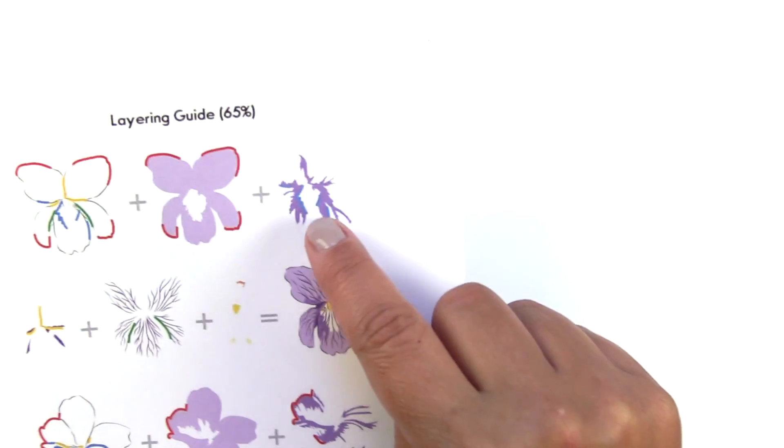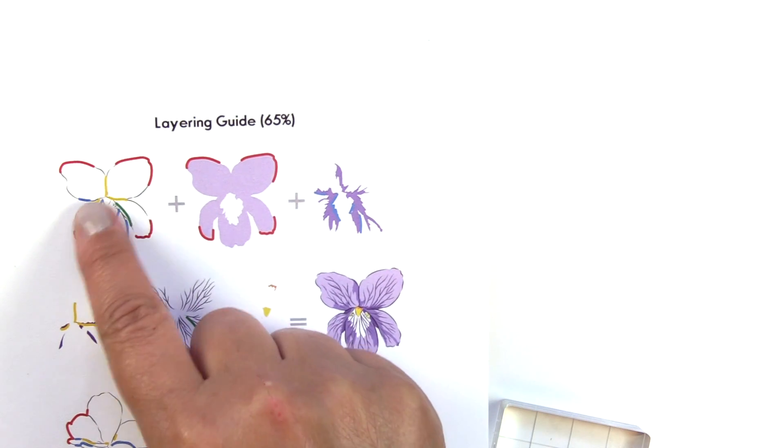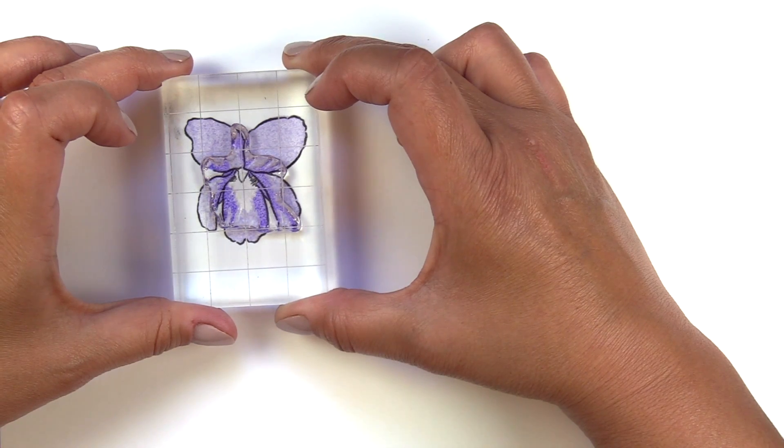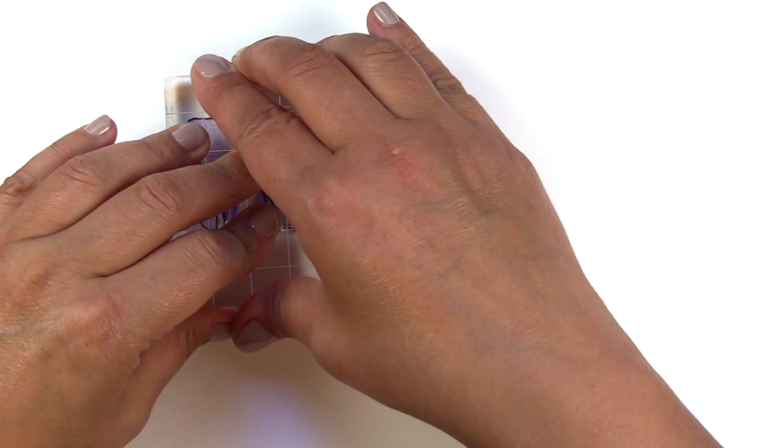The second layer, be sure to refer to your stamp packaging and the layering guide. We're going to line up the areas in the center. This will be stamped in Hydrangea.